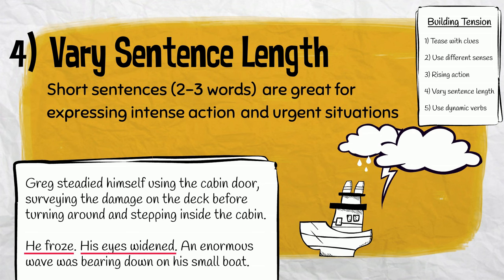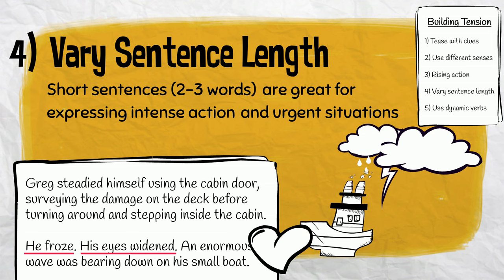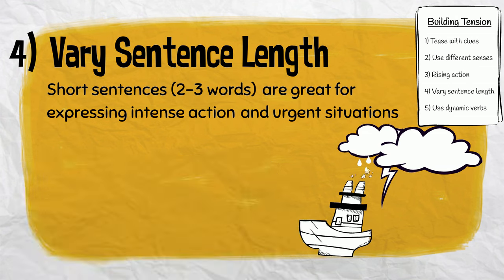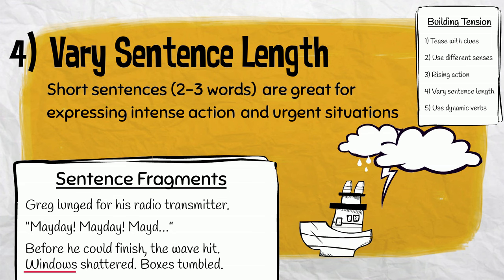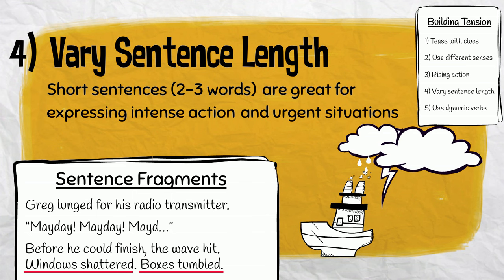You might think of a short sentence as mimicking a heartbeat. In addition to short sentences, sentence fragments can be used. Here is an example of incomplete sentences used for effect: "Greg lunged for his radio transmitter. Mayday. Mayday. Mayday. Before he could finish, the wave hit. Windows shattered. Boxes tumbled."